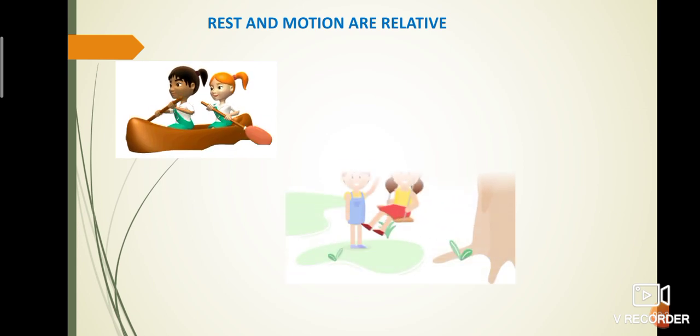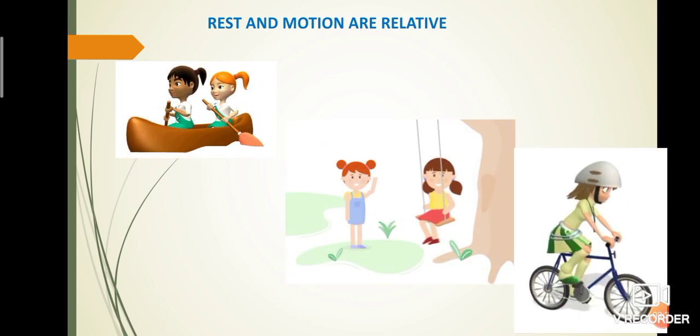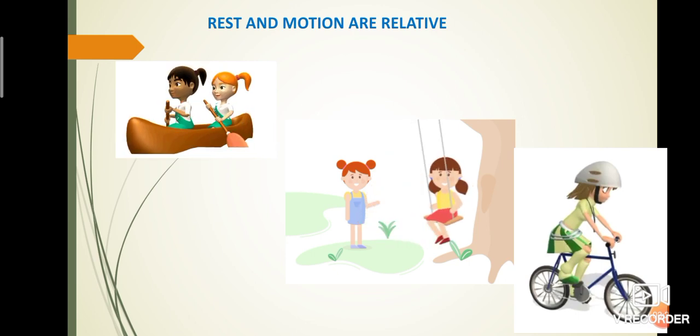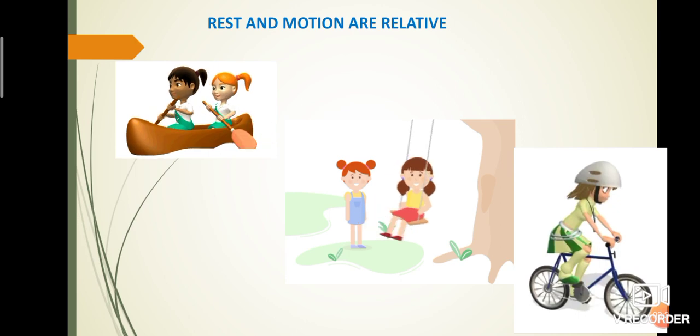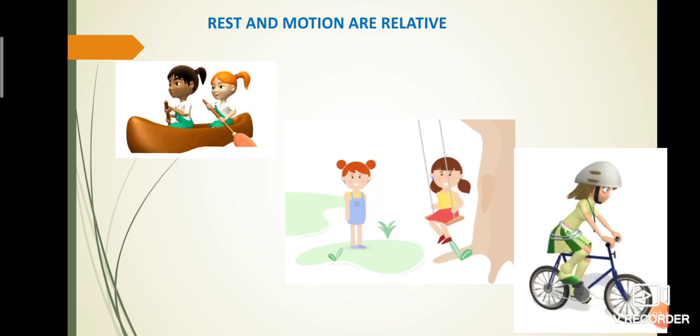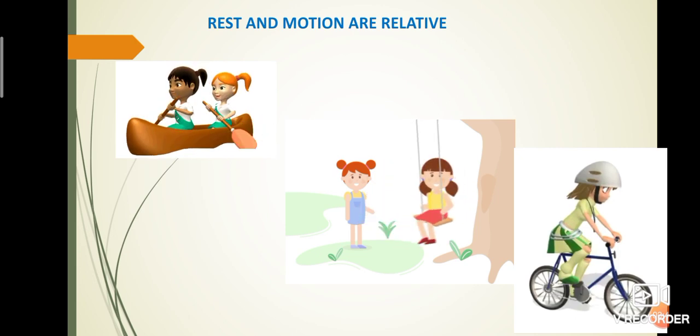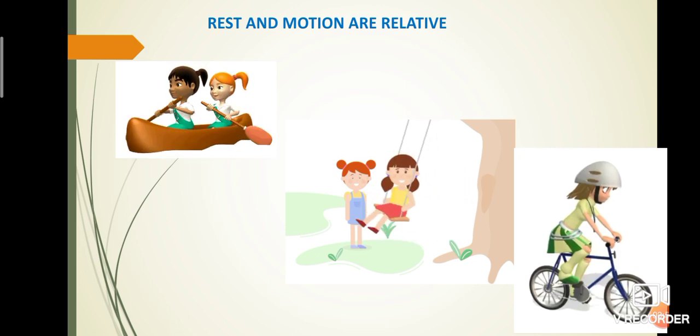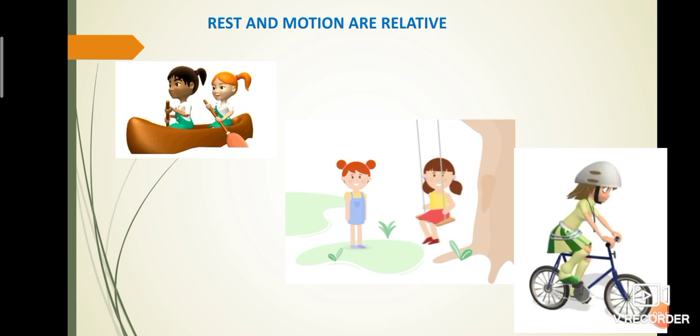From motion and rest, we get the idea that both are relative. Shall we see some examples? The girls in the boat are moving with respect to the river. But the girls are at rest with respect to the boat. The girl on the swing is at rest with respect to the seat. But she is moving with respect to the garden. Girl on the bicycle is moving. But she is at rest with respect to the cycle. So, finally, an object is at rest in relation to a certain set of objects and moving in relation to another set of objects. This implies that rest and motion are relative.